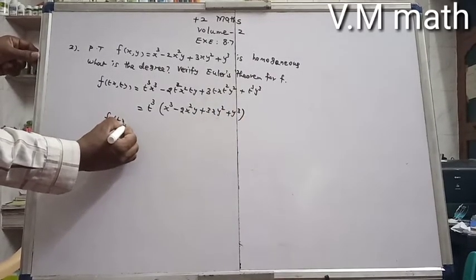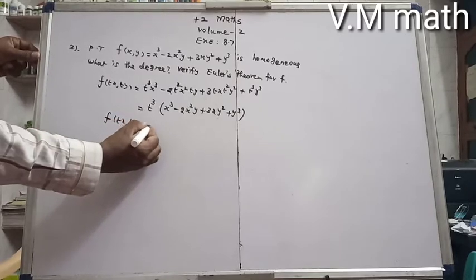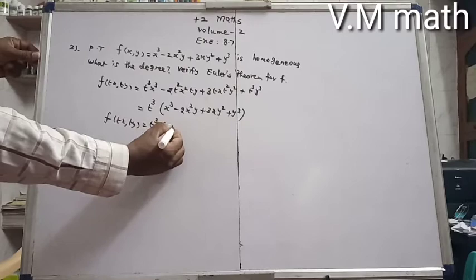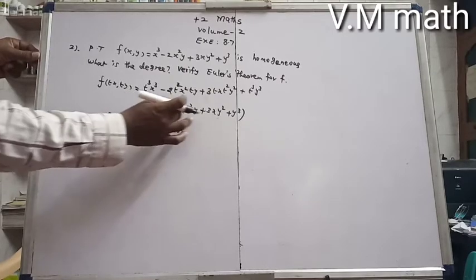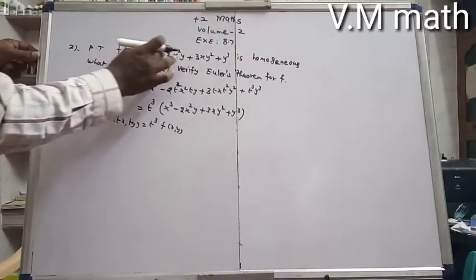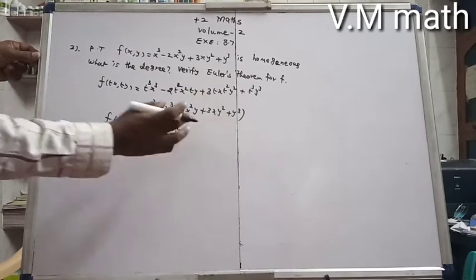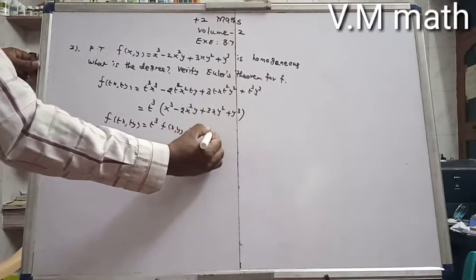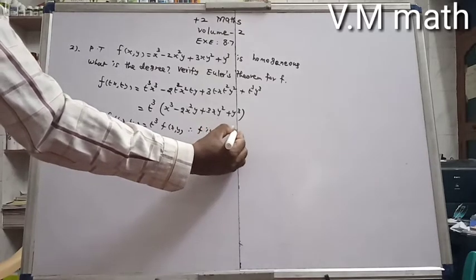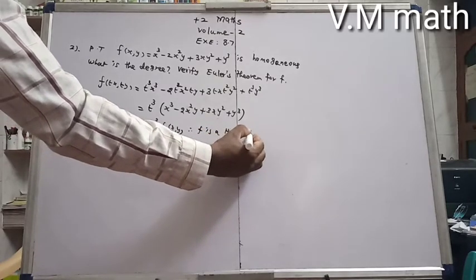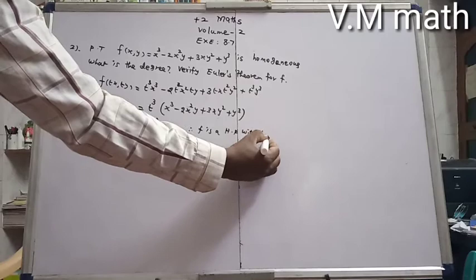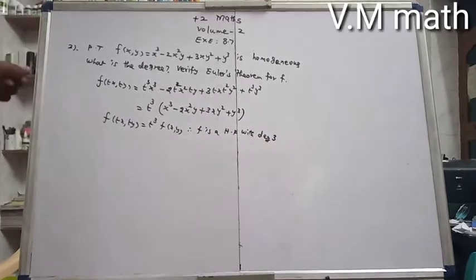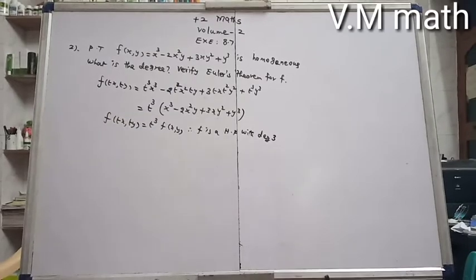Therefore, f(tx, ty) = t³ · f(x, y). So f is a homogeneous function with degree 3.